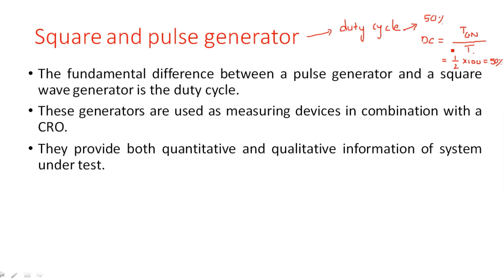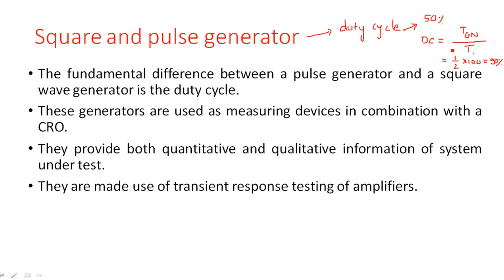Any type of signal generator is most commonly used for circuits which are under test. We apply the signal generated by these generators to the circuits under test, and then we measure different quantities like voltage, current, or resistance. They are also made use of for transient response testing of amplifiers.